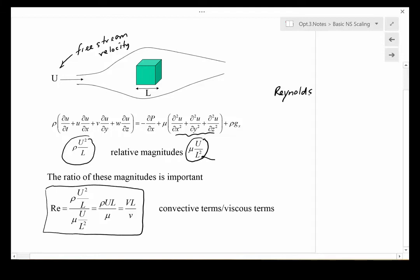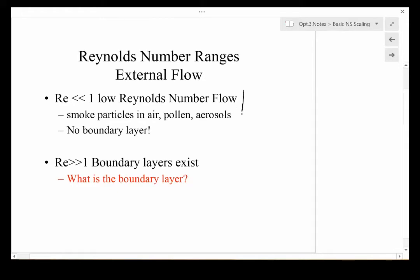The Reynolds number is an important parameter in fluid mechanics that relates inertial effects—which are the flow terms—to viscous effects, which are these shear terms. When the Reynolds number is very low, this is called low Reynolds number or Stokes flow.